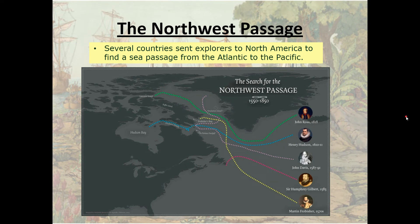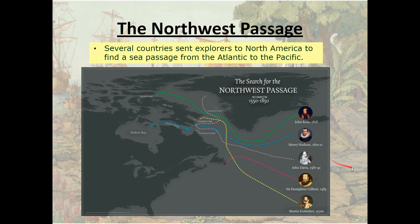Several countries sent explorers to North America to find a sea passage from the Atlantic to the Pacific Ocean, known as the Northwest Passage. Once it became obvious that the Americas were enormous, European countries wanted to find a way around them. English explorer Martin Frobisher attempted to find a path around North America going north in the 1570s and didn't find one. Sir Humphrey Gilbert attempted it in 1583, John Davis in 1587–1591, Henry Hudson in 1610–1611, and John Ross in 1818 made it the furthest. But what they all discovered was that the far north was completely frozen and there was no effective way around America to the north — the Northwest Passage was really a myth.